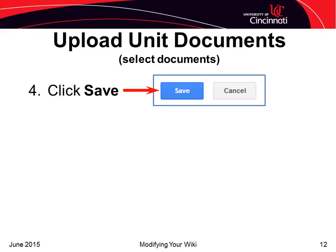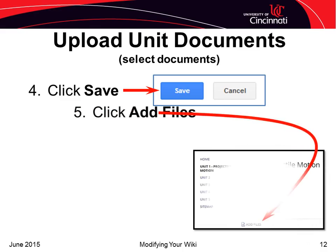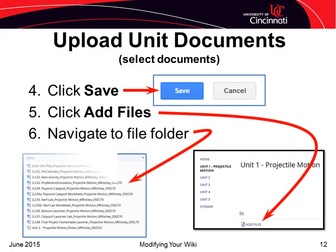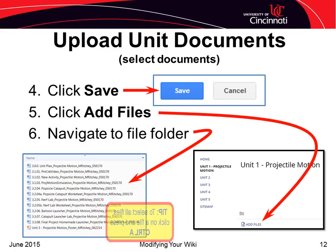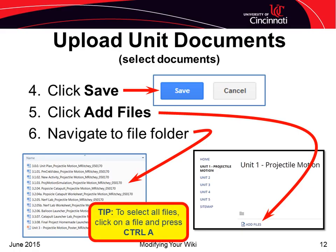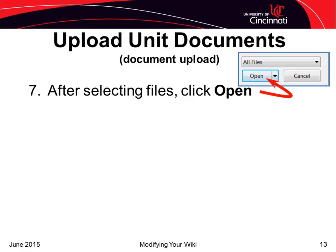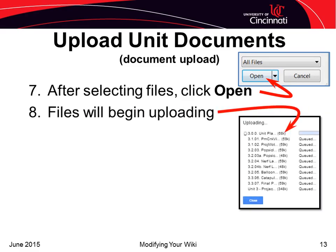After entering the Unit Title, click Save. To add files to the page, click on the Add Files link near the bottom of the page. A browse window will open to allow you to navigate to the folder containing your files. To select two or more files, hold down the Control key and click on any files you want to upload. If you want to upload everything in the directory, click on one file and then, while holding down the Control key, press the letter A to select all files. Click the Open button and the files you have selected will be uploaded.